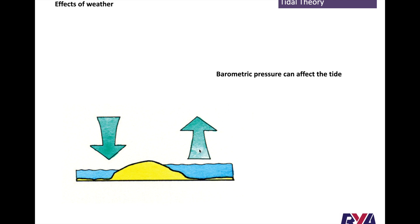Air pressure also has an effect. If the air is pushing down it will stop the tide coming up. If there's deep low pressure — such as around a hurricane — it will actually bulge the surface and you'll get a higher high tide.